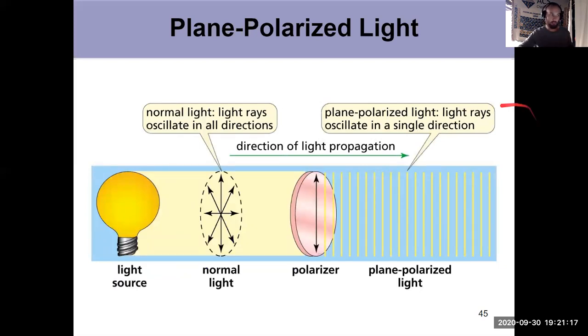In normal light, your light rays are oscillating in all directions. But in plane polarized light, all the light rays are just oscillating in a single direction. You might have heard of polarized sunglasses. It's the same sort of idea.